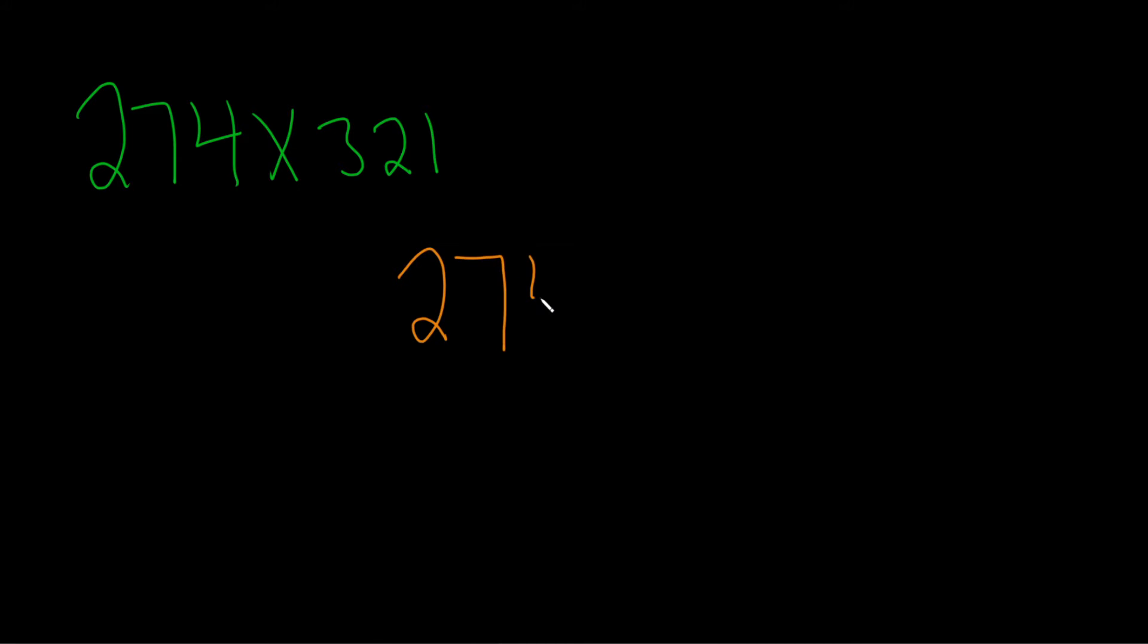So 2, 7, 4, times 3, 2, 1. It doesn't matter which one you write first. Then you draw a line and put an x.